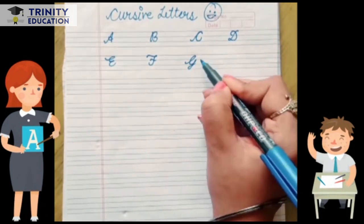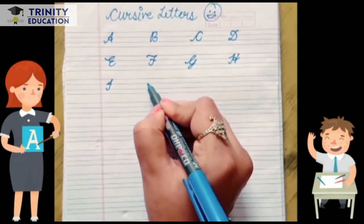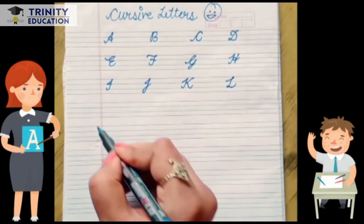G for grapes, H for hen, I for ice cream, J for joker, K for kite, L for lion.